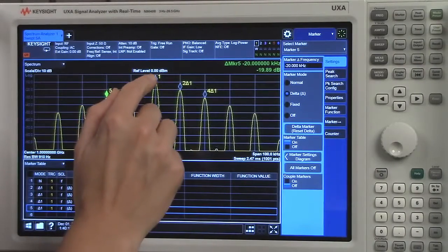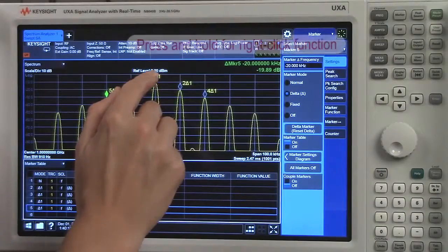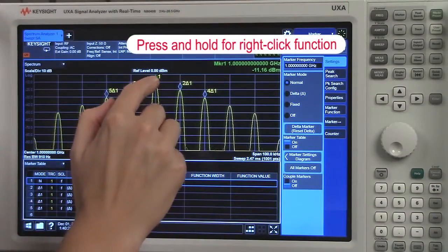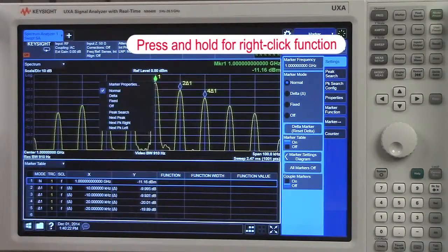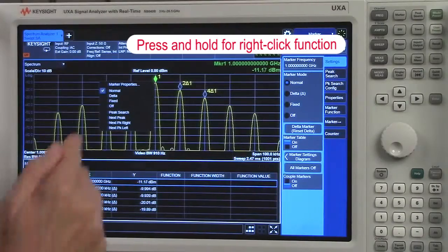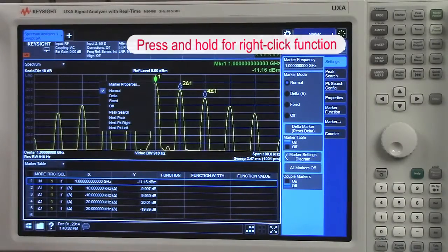Another nice feature that we have if we select a marker. See it's green now. And I hold it down. That's a right click function. So we have the ability to access our marker properties, our marker mode, and then our peak search options.